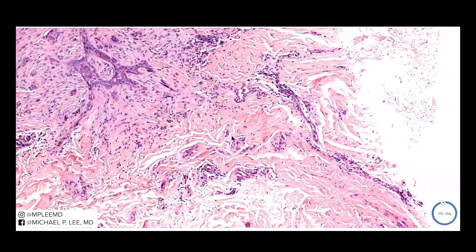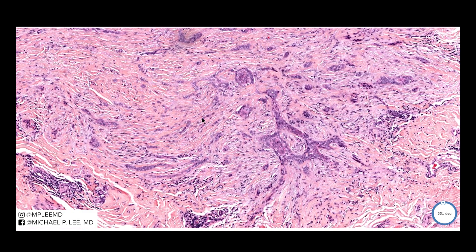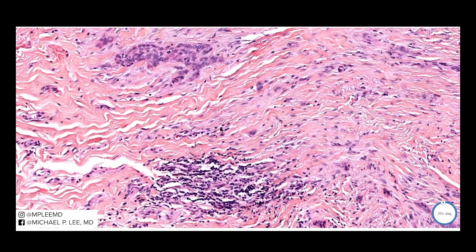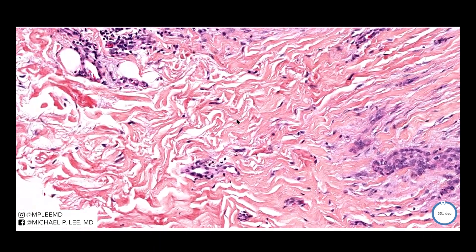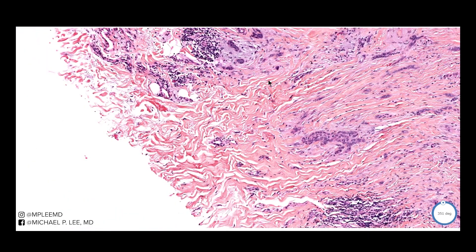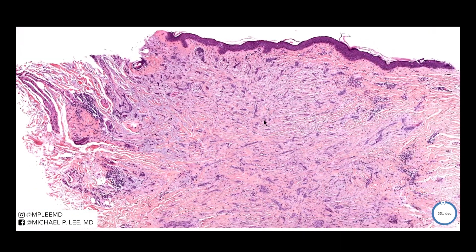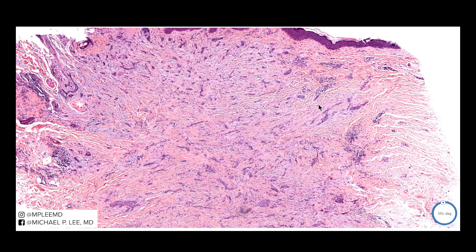So again, there are no horn pseudocysts. You can see very thin, small, single-cell to two-cell-layer thick cords, almost single-filing or a single-line-like arrangement of structures. These things can commonly involve nerve, with very little retraction artifact that you would typically see in a basal cell carcinoma. These are seen in older people, typically anywhere on the head and neck. And if you remember, CD34 is positive in trichoepithelioma stroma but negative in basal cell carcinomas.